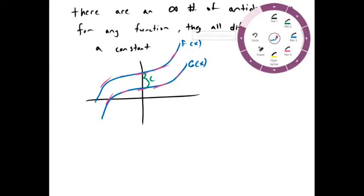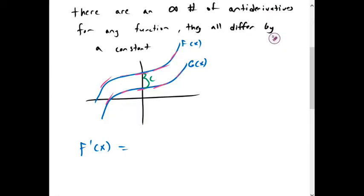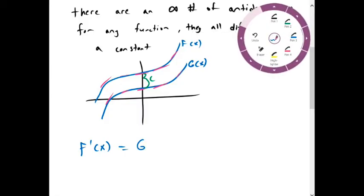So if we took f prime of x, we get the same thing as g prime of x. And let's say their derivative is f of x. F and G of x are antiderivatives of f.